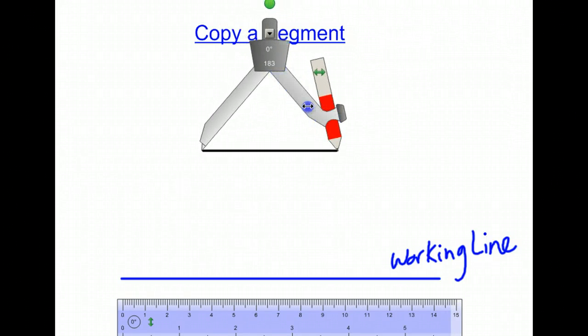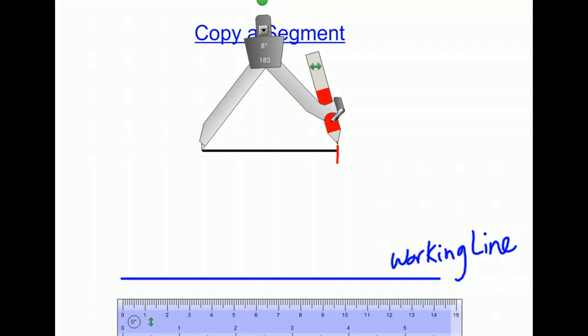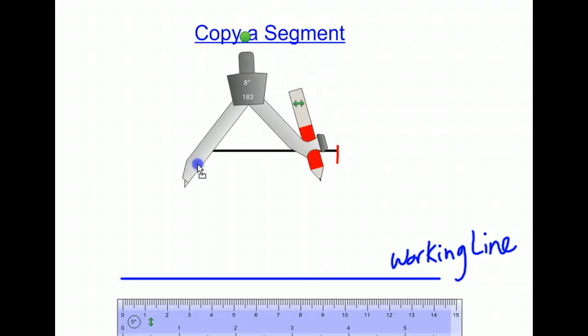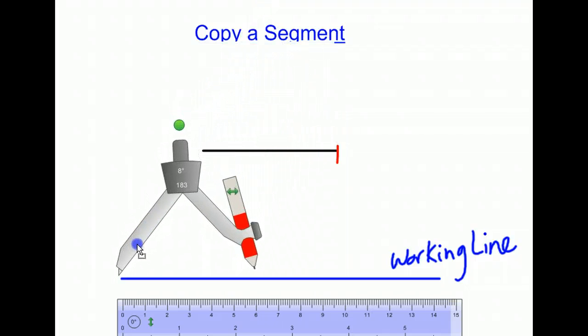Make sure your compass is set to that width. Once you have that, you can put a small mark there just to show that you have that segment length marked off.